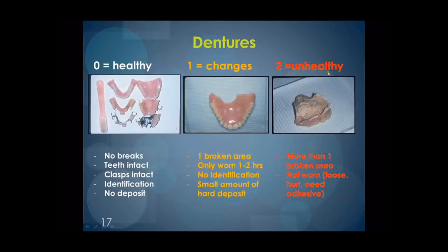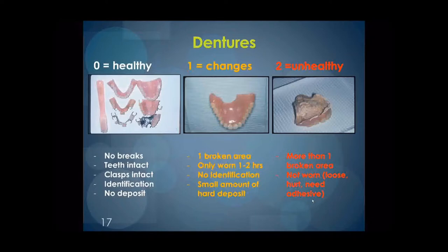In-house treatment can be initiated as appropriate. Referral is generally not necessary unless there is concern from the resident or the nurse feels the situation poses a risk. A level 2 or unhealthy category covers situations where there is more than one broken area, the denture is split in two pieces, is not worn due to poor fit, is causing discomfort, can only be worn with denture adhesive, or is covered with heavy tartar, stain, or debris that cannot be removed by staff.